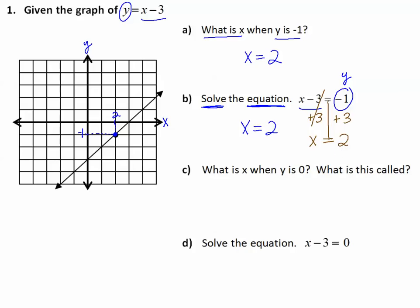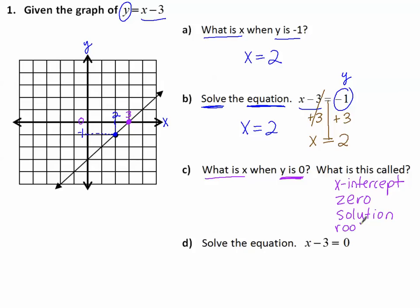What is x when y is 0? We go to where y is 0 and find the x value — that's where x is 3. The point on the graph where y is 0 is crossing the x-axis. What is this called? That's called the x-intercept, also known as the zero. Today, because we are solving an equation, we are also going to call it a solution. Another name is a root — so it has many names: x-intercept, zero, solution, and root.